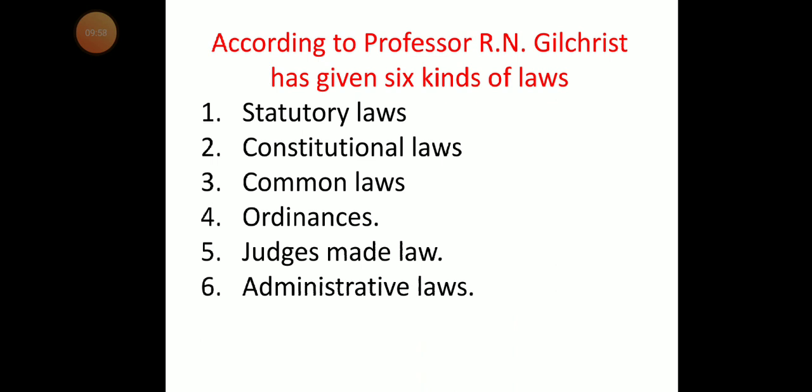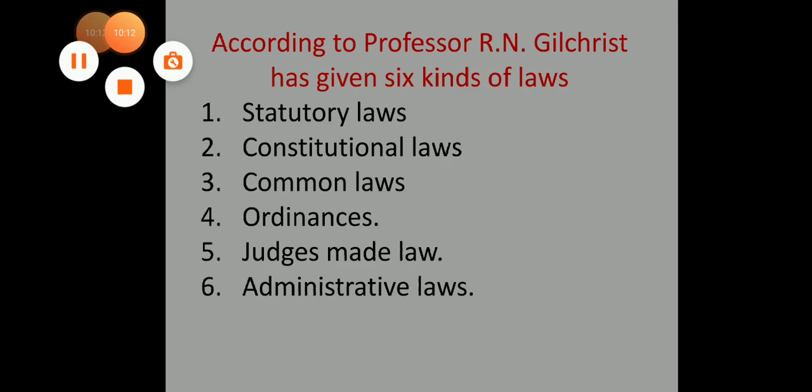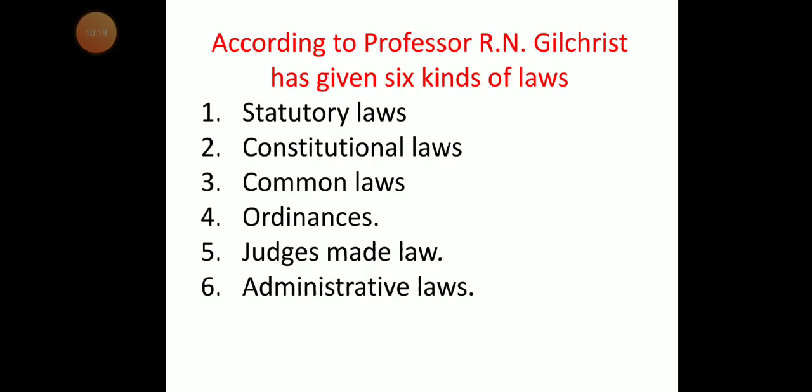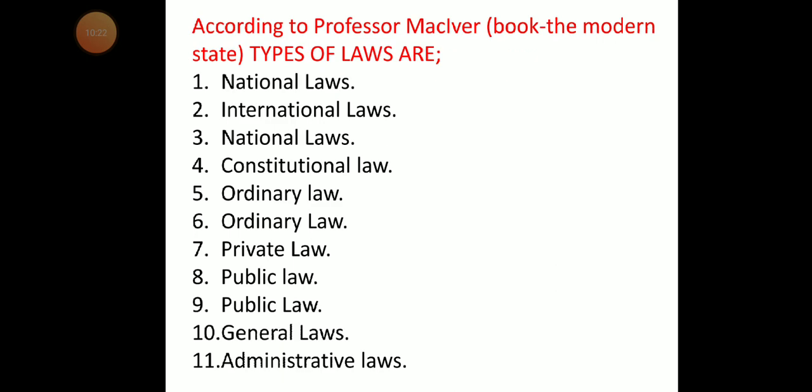If you want detail on all these categories, comment below and a detailed video will be made. According to Professor MacIver in his book 'The Modern State,' types of laws include national laws and international laws. National laws further include constitutional laws, ordinary laws, and ordinary law is further divided into private law, public law, general law, and administrative law.